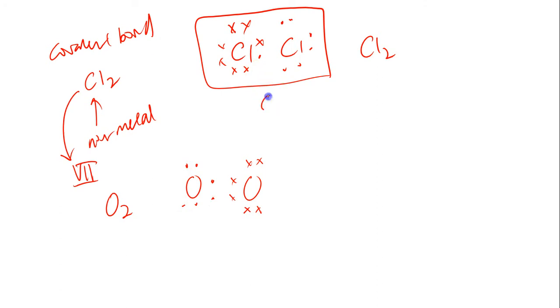So if I represent chlorine's shared pair of electrons here as a single line, so one line represents a pair of electrons. Oxygen here would have two lines. So this is a double covalent bond versus a single covalent bond.